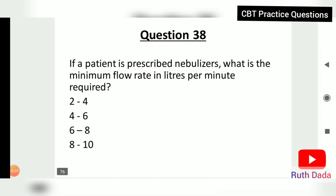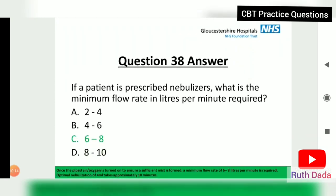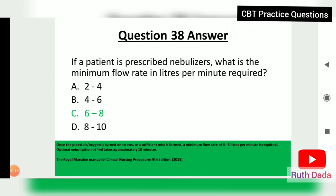Question 38: If a patient is prescribed nebulizers, what is the minimum flow rate in liters per minute required? The answer is six to eight liters per minute. Once oxygen is turned on, a minimum flow rate of six to eight liters per minute is required to ensure a sufficient mist is formed. Optimal nebulization takes approximately 10 minutes.